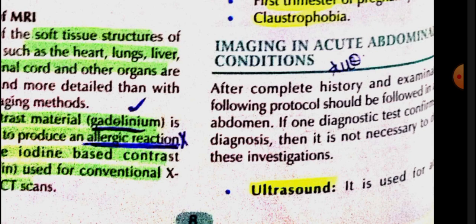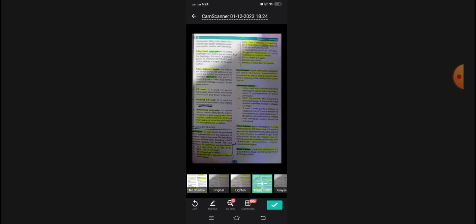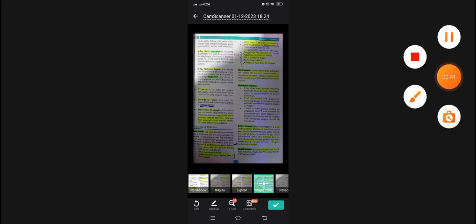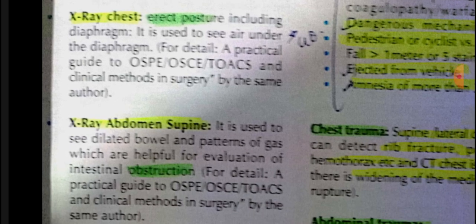Ultrasound is used to detect cholecystitis, renal colic, ovarian pathology, cystitis, ectopic pregnancy, acute pancreatitis, ascites, and abscesses. The second initial investigation is chest X-ray.